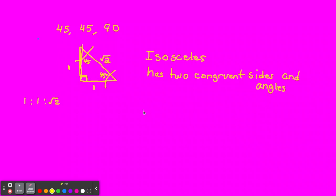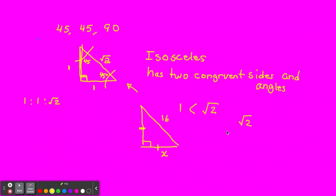For example, let's say the hypotenuse was 16, and you see those two lines saying the legs are equal, so we know it's a 45-45-90. We want to find x. We know that the square root of 2 is greater than 1 — it's between the square root of 1 and the square root of 4, so between 1 and 2. In order to find what x is, we're going to divide — divide by the square root of 2. So we're going to say 16 divided by the square root of 2.